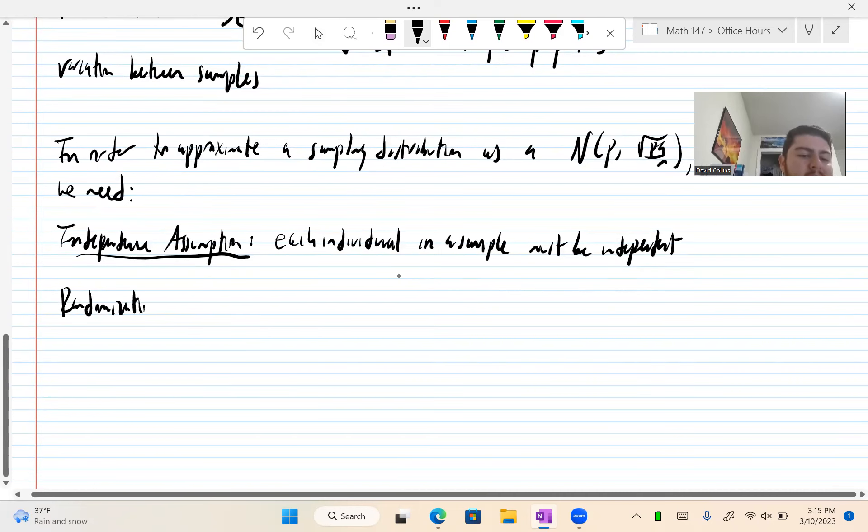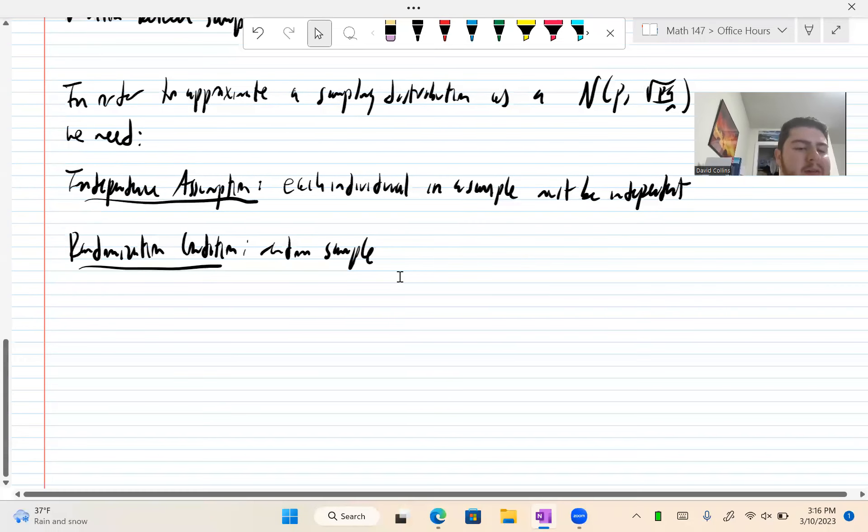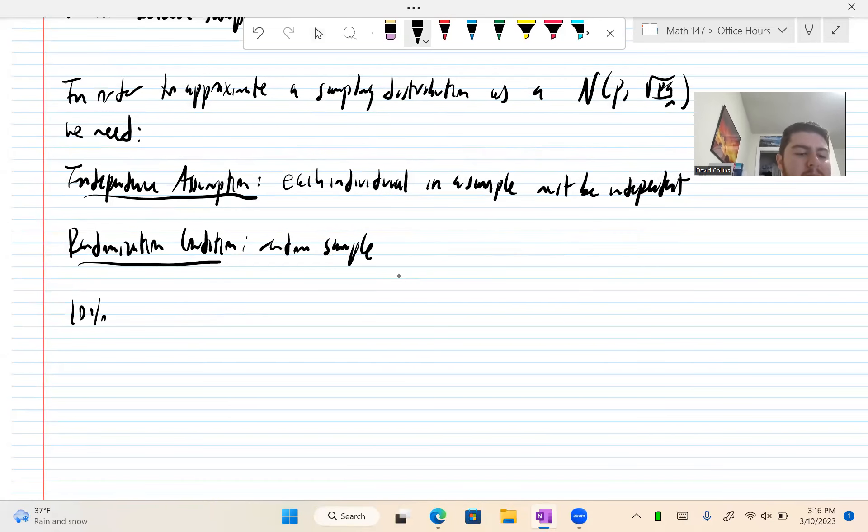This can be essentially assumed. Similarly, we have the randomization condition. Again, this is basically, do we have a random sample? Next, we have the 10% condition. This is our sample size must be less than 10% of the population size.